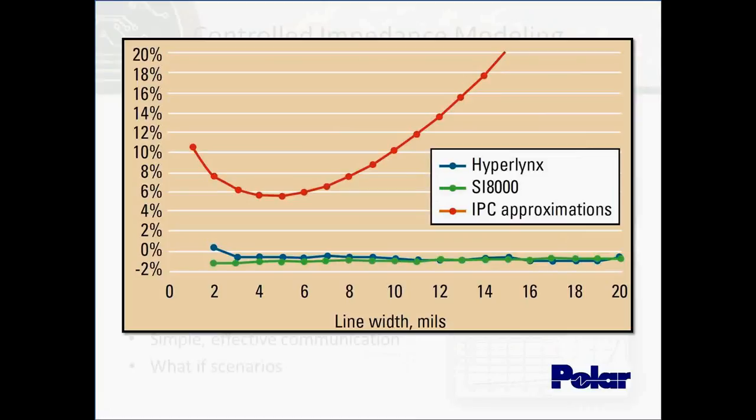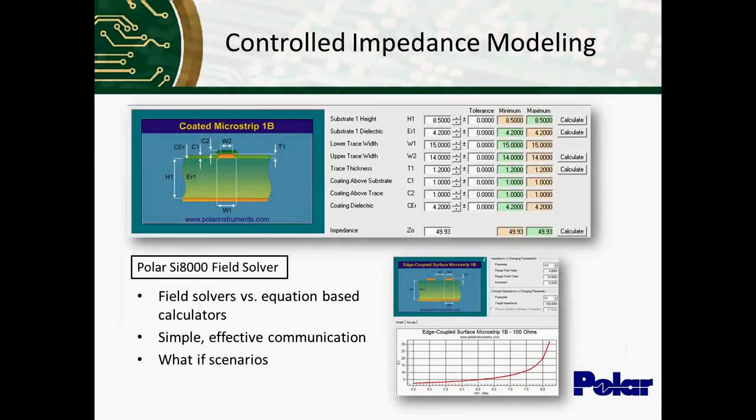As you can see, the equation-based approximations do give you some degree of accuracy. It looks like the best is about 6%. But depending on the line widths and configurations, you can get up to 20 and 30%. So look for maybe educational purposes, but as far as fabricating a PCB, you are going to need to use a field solver. Now, there's nothing special about Polar's. Any field solver will get you the right answer. But people have told us that ours is nice and easy to use.